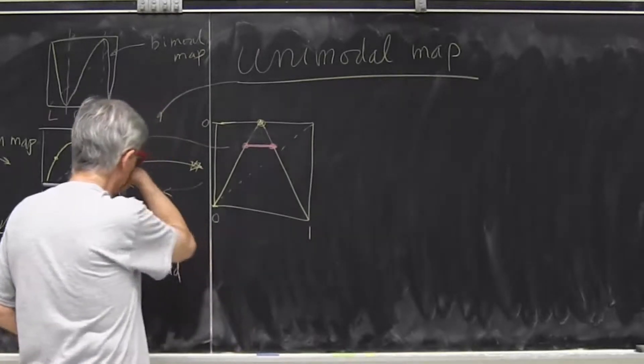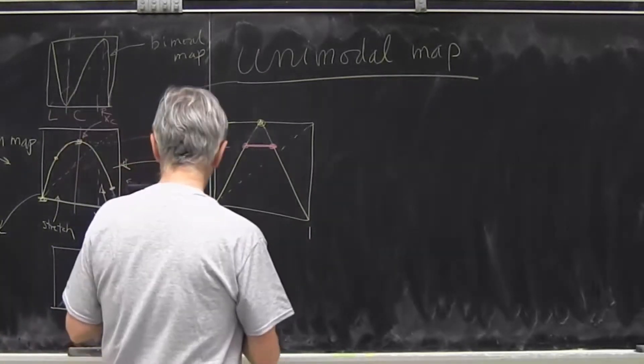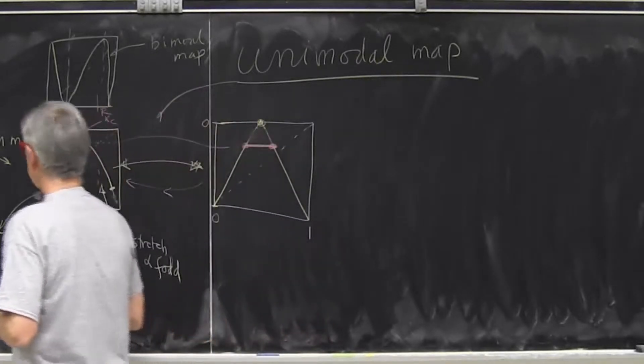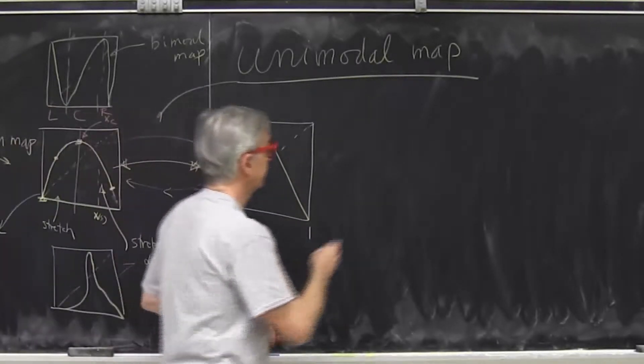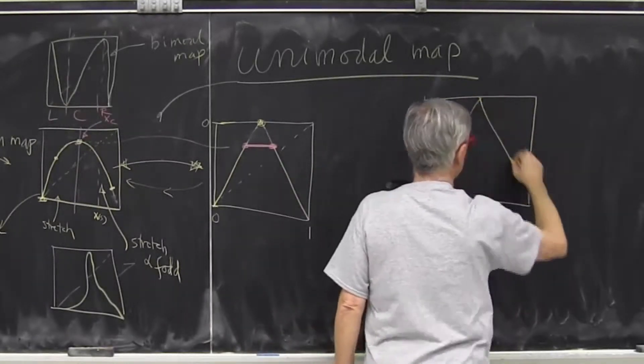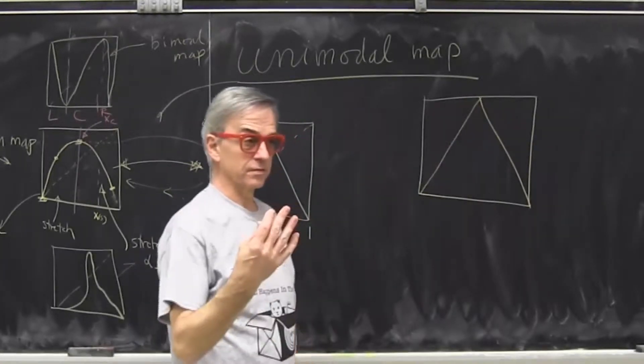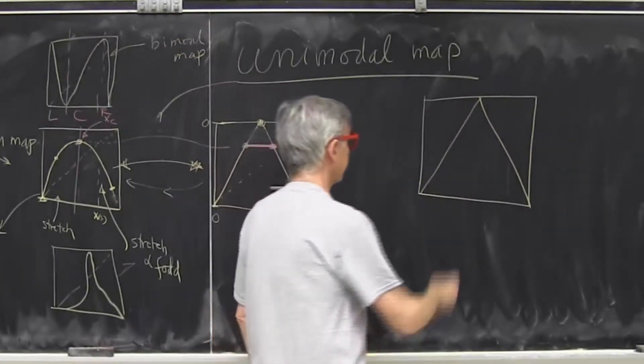So now why is this a cool thing? It's cool for the following reason. The tent map is a nice example of symbolic dynamics which is unrestricted, has no rules. For the tent map everything is possible.